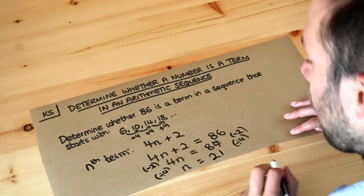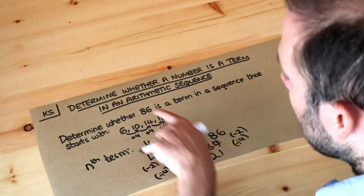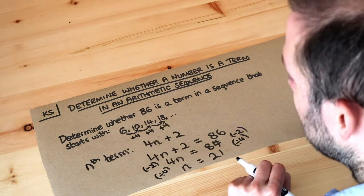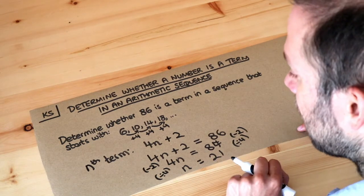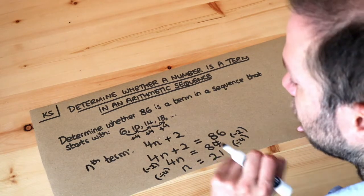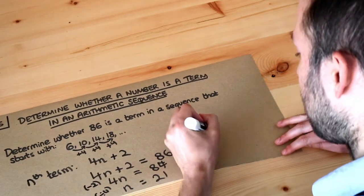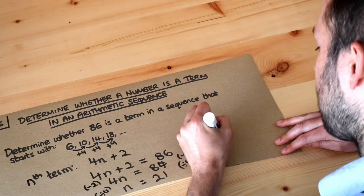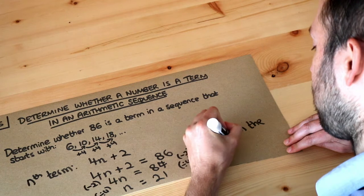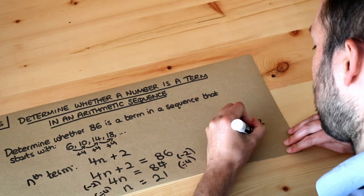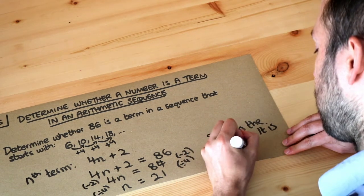And what that tells us is that because this is a whole number, 86 is in the sequence. We've basically worked out that 86 is the 21st term in the sequence, remembering that n just gives you the position of the sequence. If n is 21 we have the 21st term, so we could say 86 is in the sequence, and although the question didn't ask for it, we know where it is in the sequence - it is the 21st term.